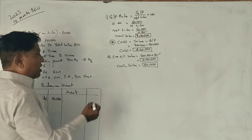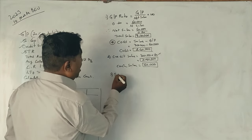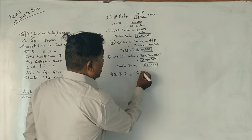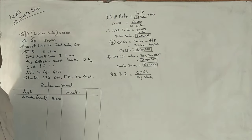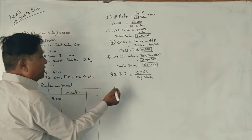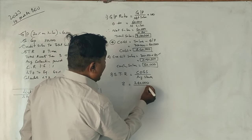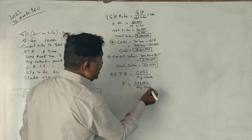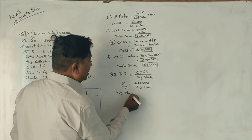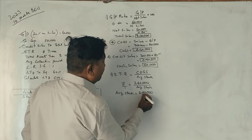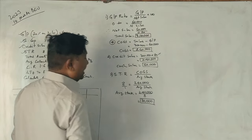Stock turnover ratio equals cost of goods sold divided by average stock. Stock turnover ratio is 8 times and cost of goods sold is Rs. 2,40,000. By cross multiplication, average stock equals Rs. 2,40,000 divided by 8. Closing stock equals Rs. 30,000.